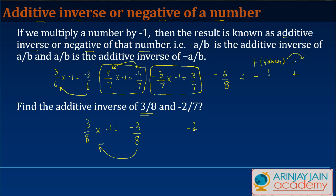-2/7 into -1 gives you 2/7. 2/7 is the additive inverse of -2/7, and that's your answer.